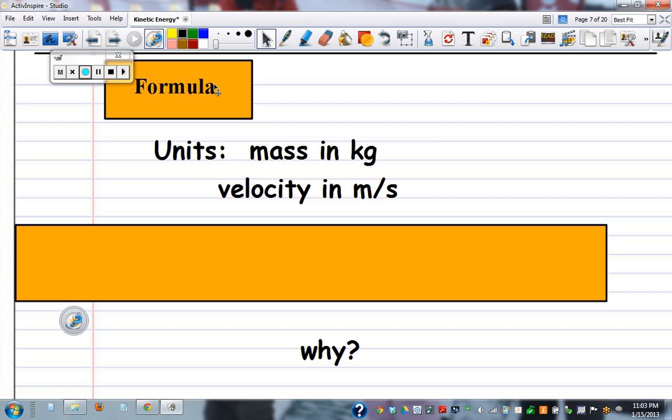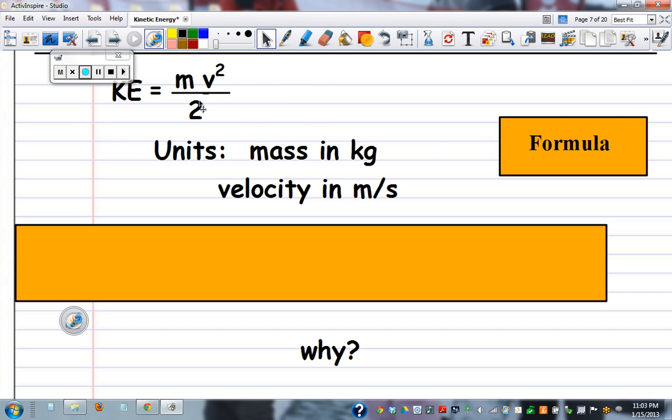And the first thing you need to know is the stuff we always need to know. Here's the formula. Kinetic energy is mass times velocity squared divided by two. The units of mass are kilograms. Velocity is in meters per second.